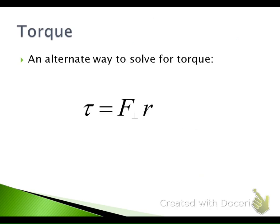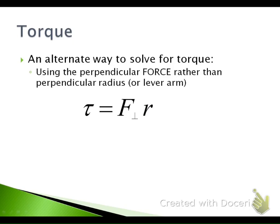Our second way to solve for torque is instead of using R-perpendicular, we're going to use a perpendicular force. This involves breaking forces into components — a perpendicular and a parallel component. The equation only changes in that we add the perpendicular for the force: R times F-perpendicular. This time we're going to use perpendicular force rather than perpendicular radius.